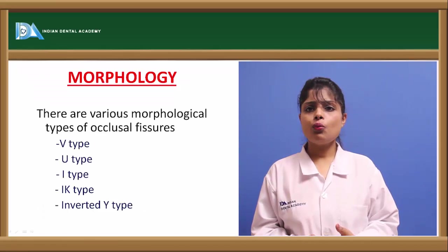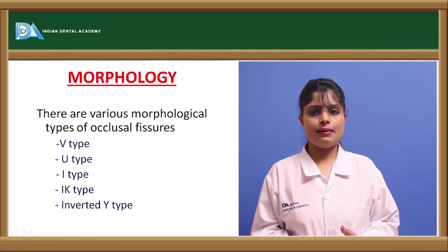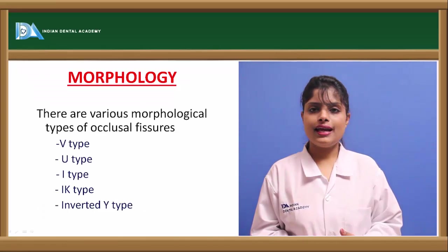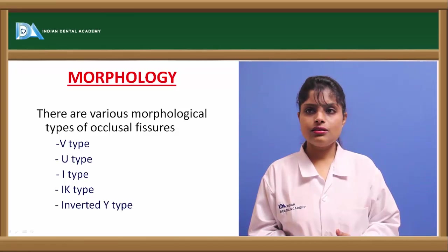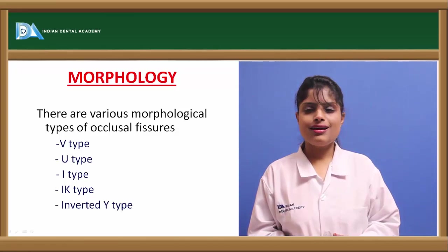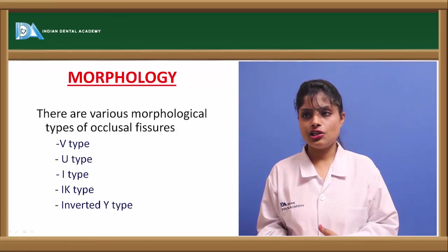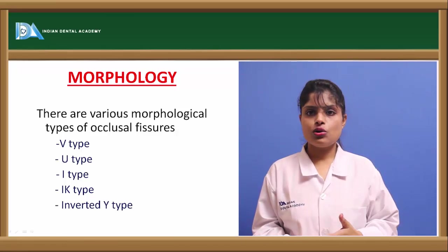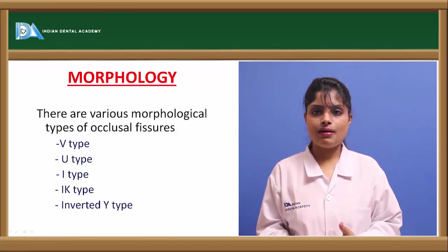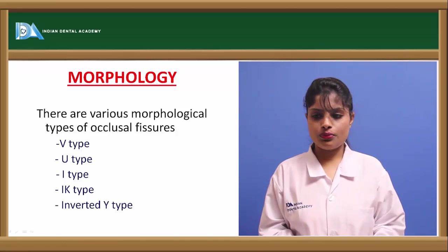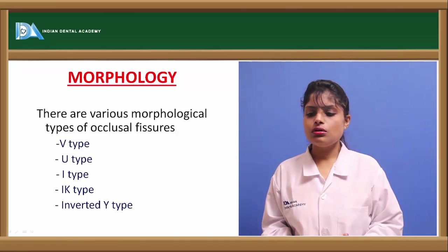Now, what are the different types of pits and fissures? They can be either U, V, I, IK, or inverted Y shape. This was classified by Dr. Nango.